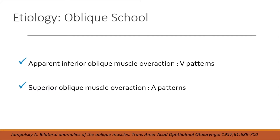Inferior obliques are elevators, extorters, and abductors. When the inferior oblique is overacting, the eye is going to abduct. So if there is an esotropia in the primary position, there's going to be less esotropia in upgaze and more esotropia in downgaze. Inferior oblique overaction associated with esotropia gives a V pattern esotropia. Conversely, if there is an exotropia with inferior oblique overaction, there is more exotropia in upgaze and less exotropia in downgaze.